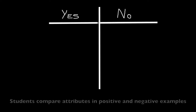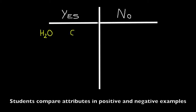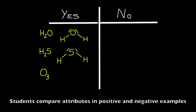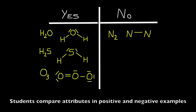The lesson begins by presenting Exemplar Set 1 to the students. This set contains positive and negative examples, and using their knowledge of Lewis structures, the students compare the attributes in these positive and negative examples.